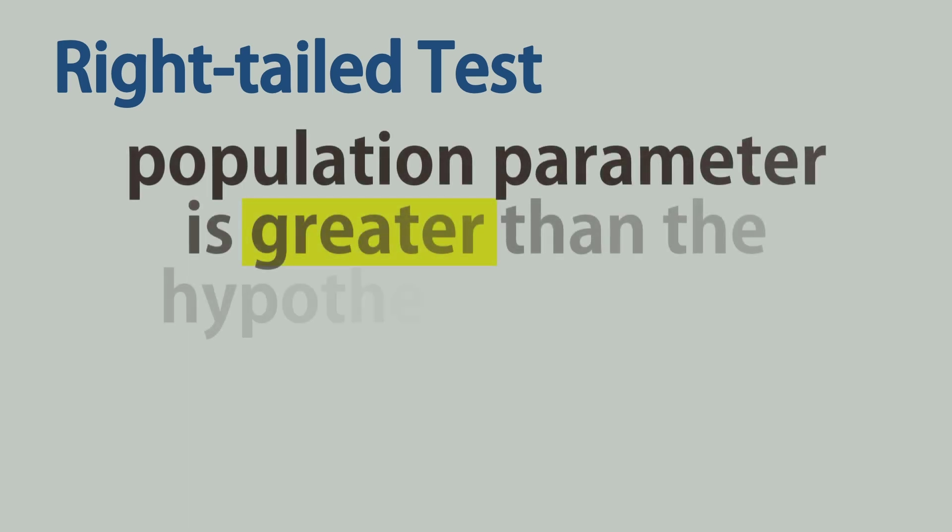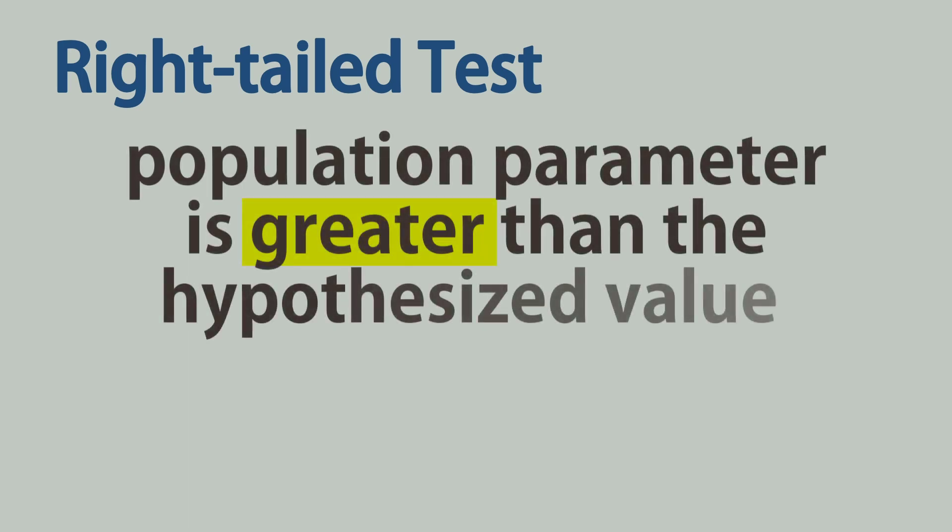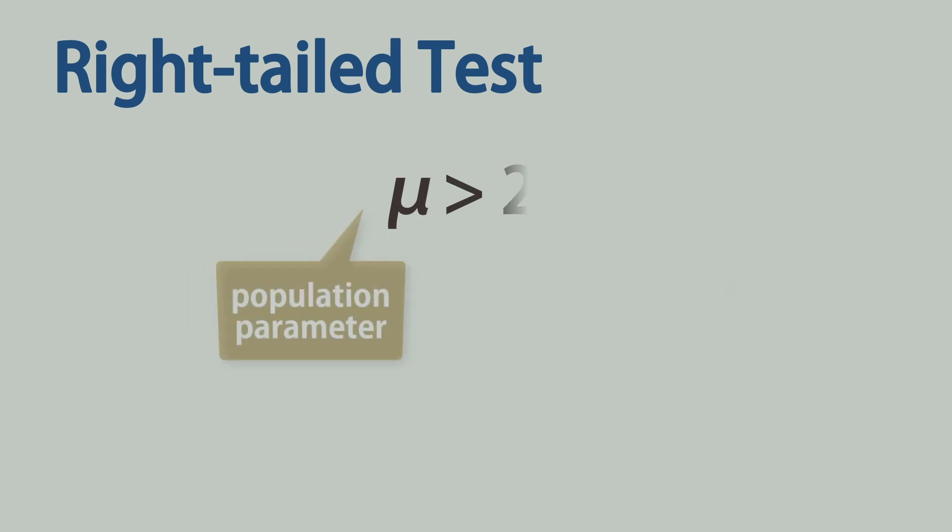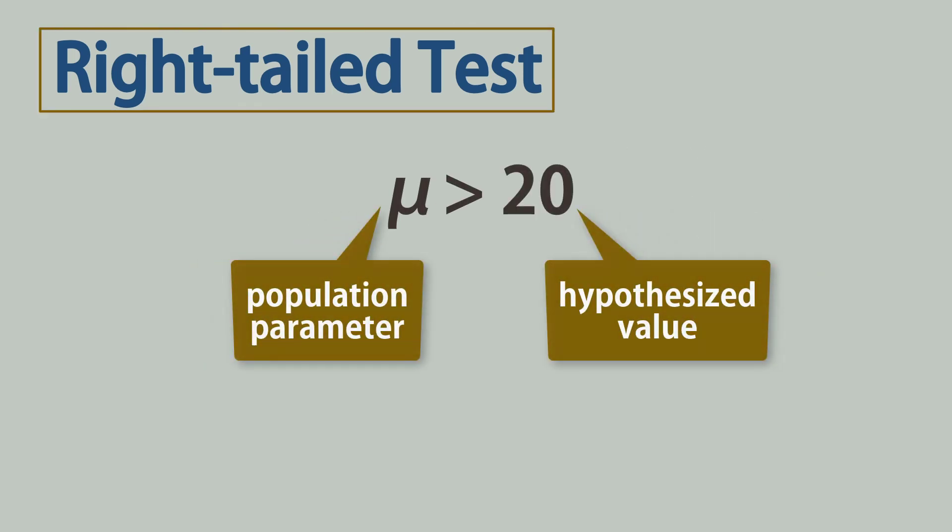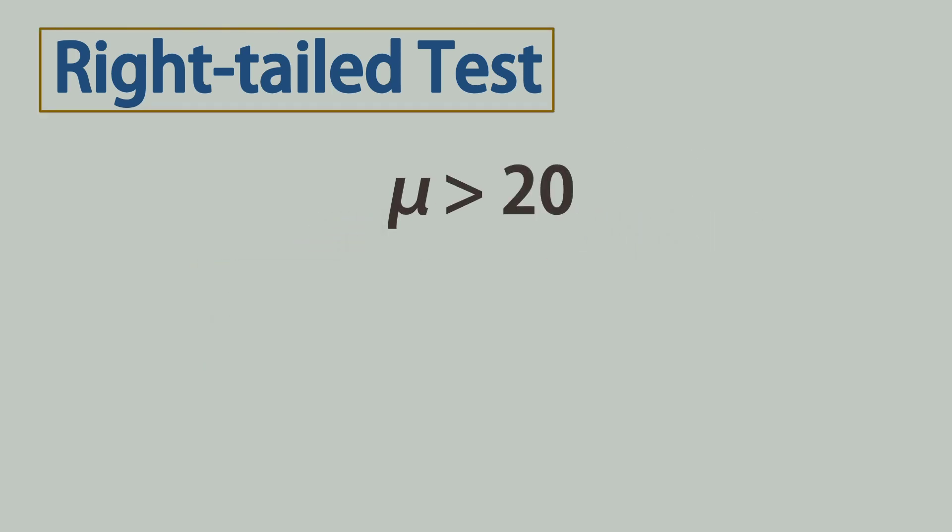A right-tailed test is applied when the research or alternative hypothesis indicates that the population parameter is greater than the hypothesized value. For example, to test if a population mean is greater than 20, we will use a right-tailed test. A right-tailed test is also called an upper-tailed test.